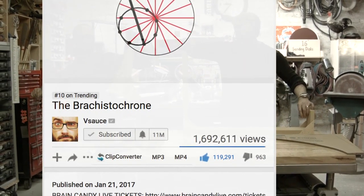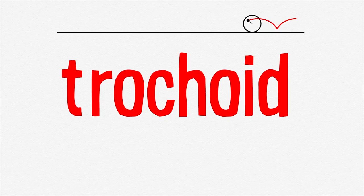Let's take some time to appreciate other kinds of roulettes. As mentioned before, trochoids are curves made by discs rolling on straight lines.